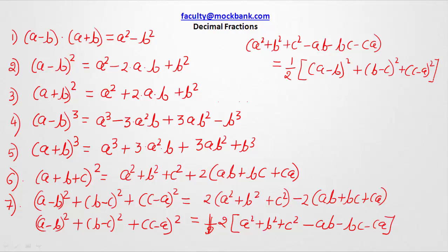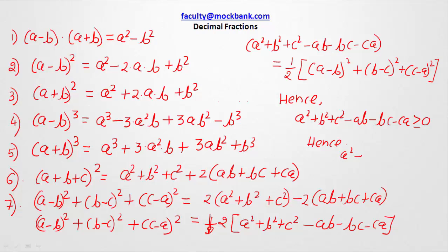Now, you can see that the right-hand side is a positive value, because the square of any value is always positive. Hence, the left-hand side for sure will also be a positive value. Therefore, a² + b² + c² - ab - bc - ca is always going to be a positive value, and equality holds when a = b = c. We can also say that a² + b² + c² is always greater than or equal to ab + bc + ca.